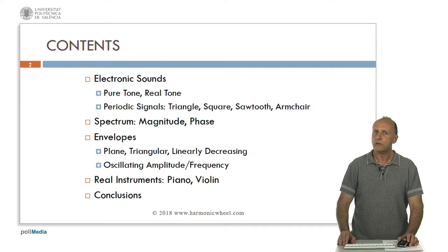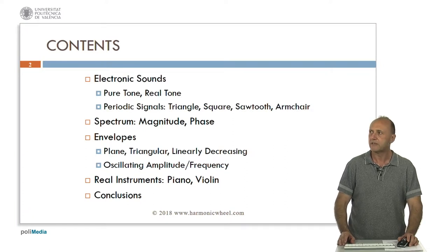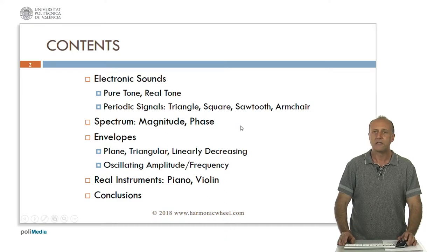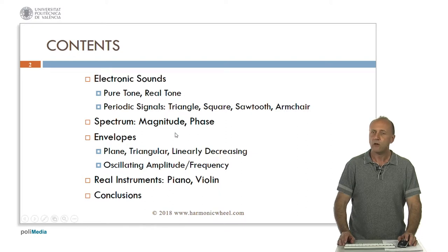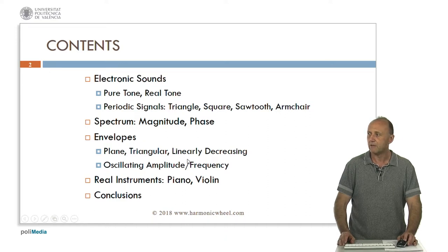We will start with very simple sounds which are electronic, such as the pure tone and the real tone, and then other periodic signals such as triangle, square, or sawtooth, and a new one developed by me called Amchea. The spectrum has two characteristics: the magnitude and the phase. We will explain what is the envelope of a sound and how it affects the spectrum. We will consider different types of envelopes: plain, triangular, linearly decreasing, and also oscillating amplitude and frequency.